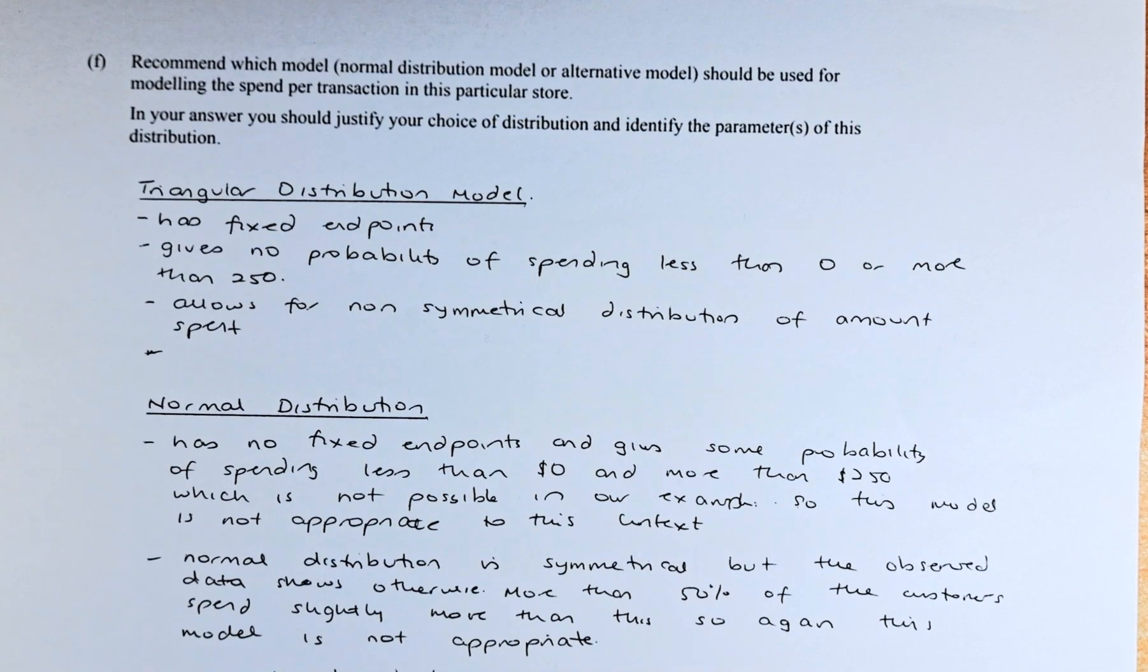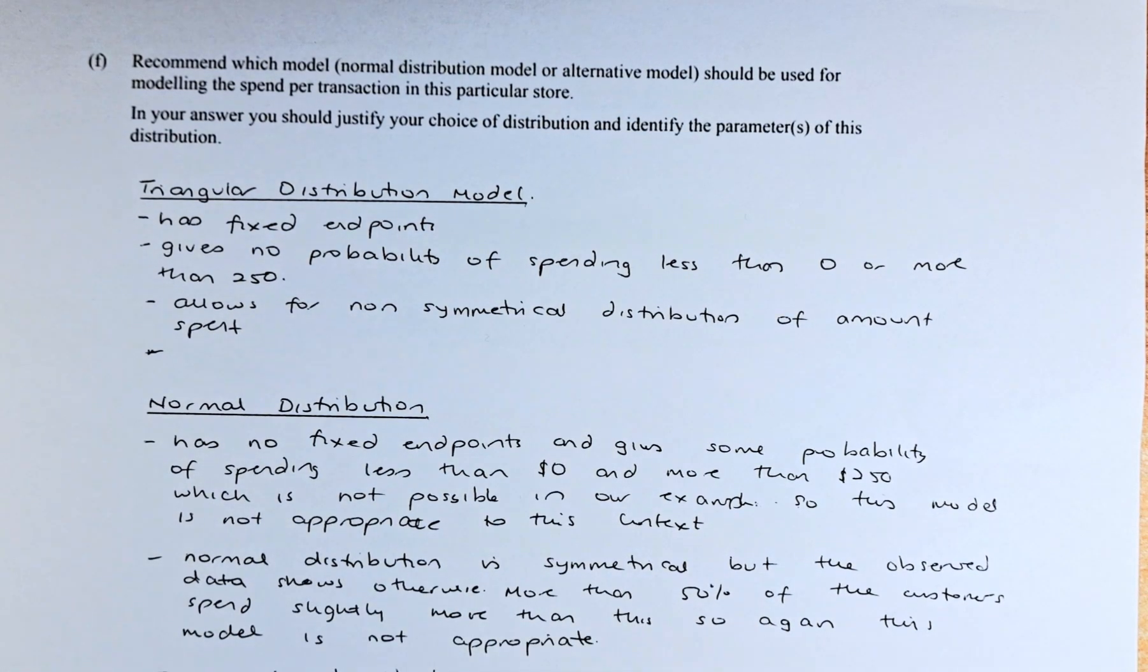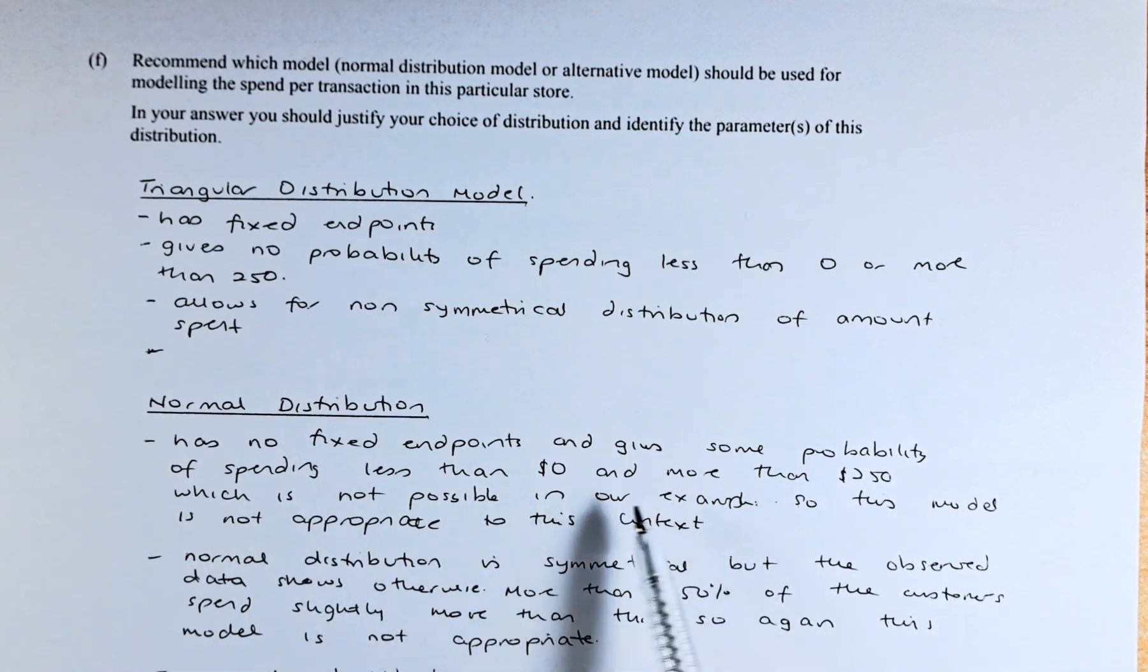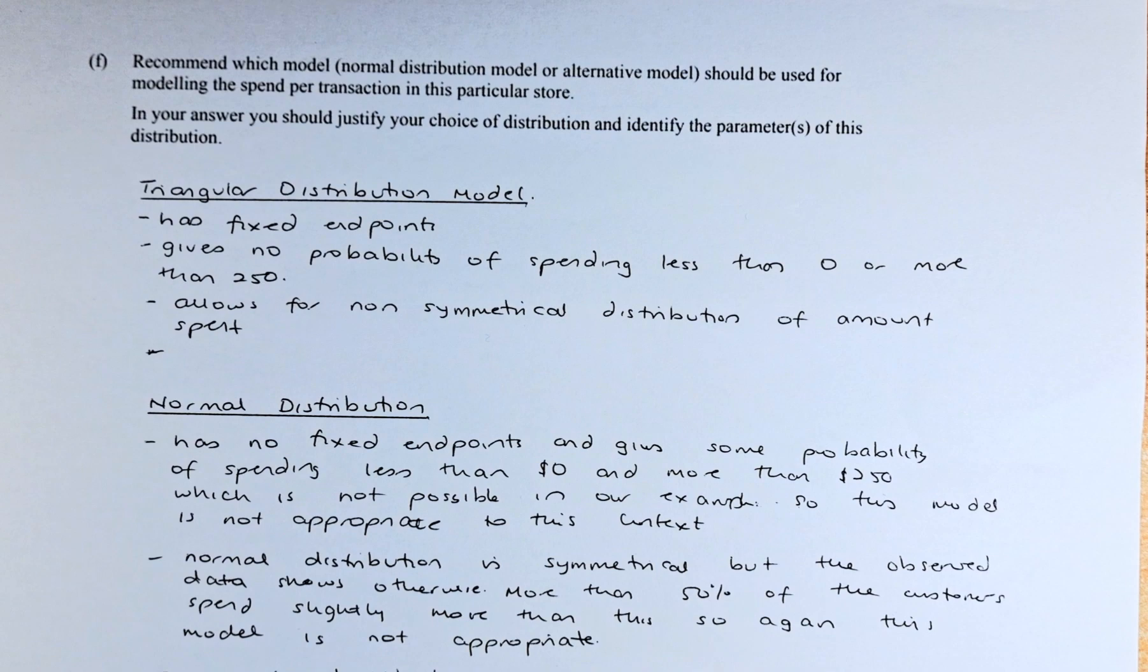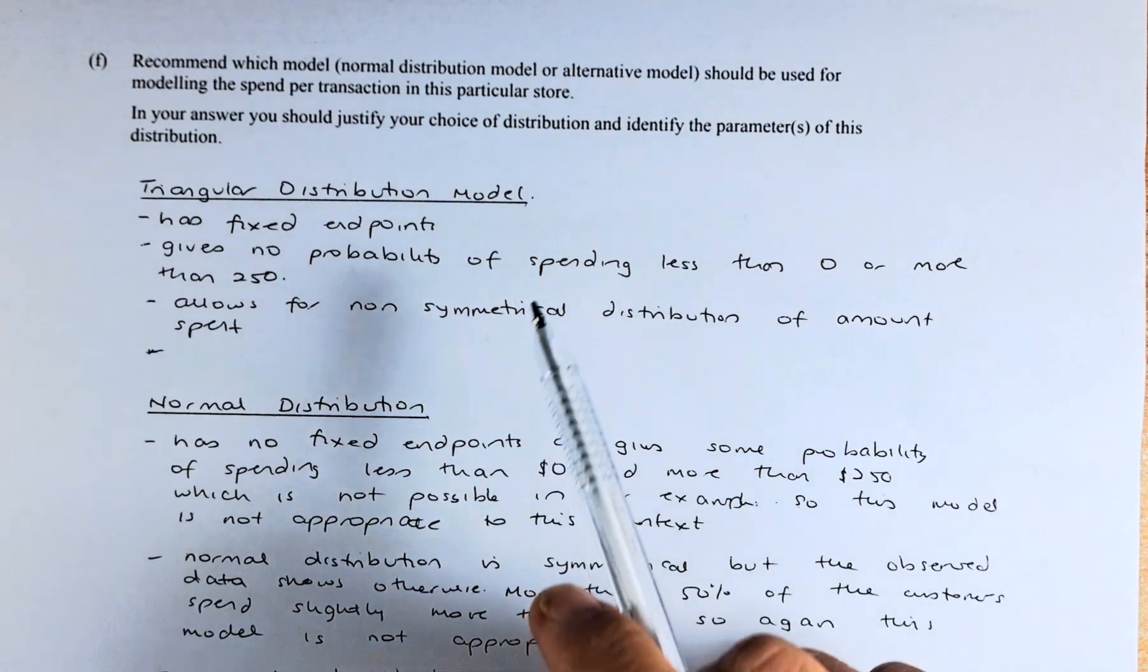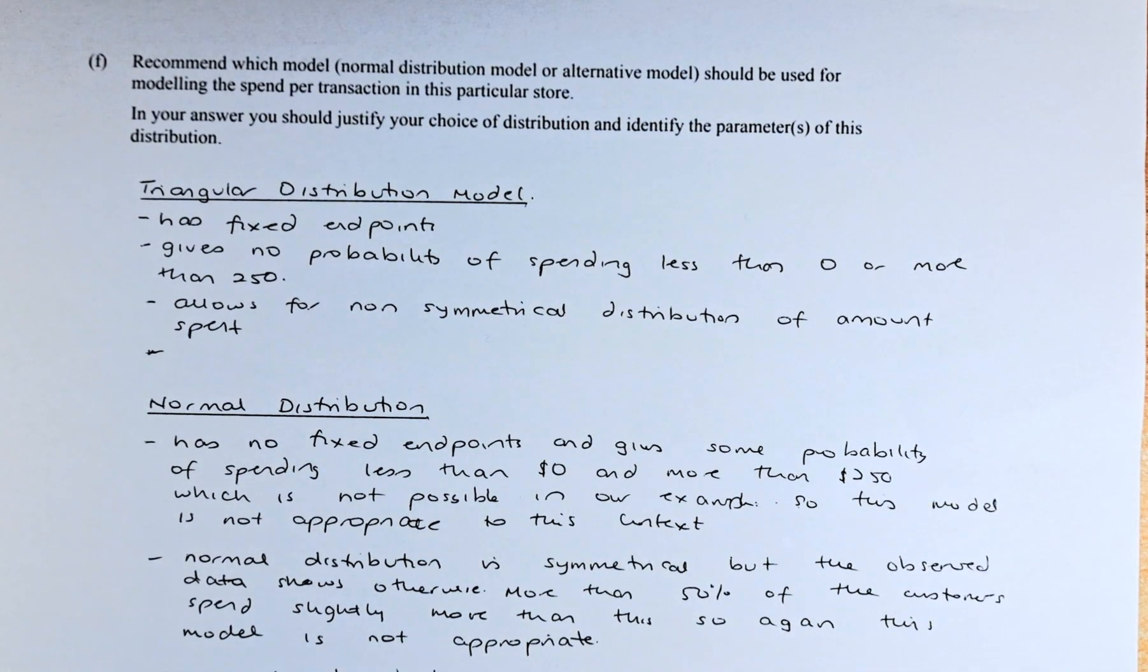The normal distribution has no fixed endpoint, while the triangular has fixed endpoints. So this gives some probability of spending less than 0 or more than 250. However, in our example, this is not applicable. So that's why we are going to choose the triangular distribution for our model.